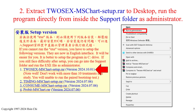The second way to run 2-Sex is to extract the 2-Sex MS Chart setup .rar file to your desktop. Then navigate to the support folder and run the program directly as an administrator.